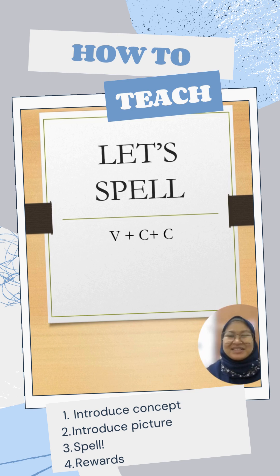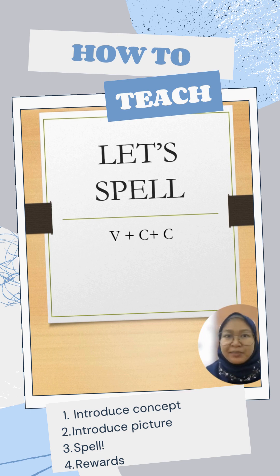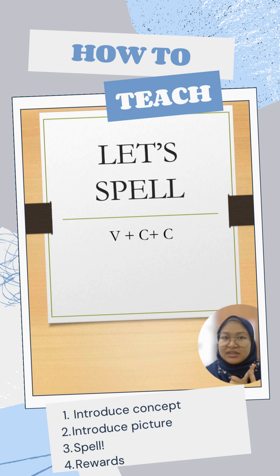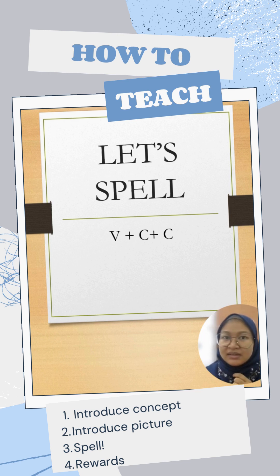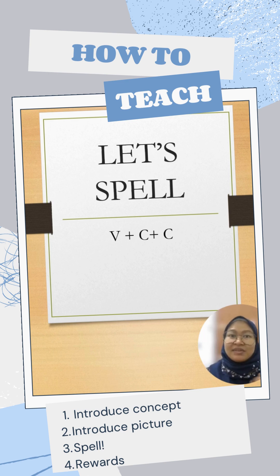Hi parents! Let's get started with how to teach children how to spell words based on the pictures given. So remember: introduce the pictures, encourage the spelling, and then be excited when they got it correct. So let's get started with the first example.